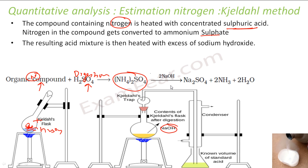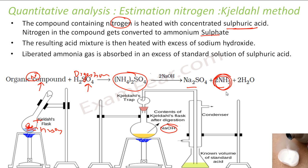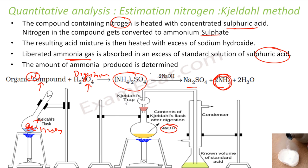After digestion, when you react the ammonium sulfate with sodium hydroxide, you get Na₂SO₄ and ammonia. You then trap this ammonia in sulfuric acid — this is called Kjeldahl's trap.